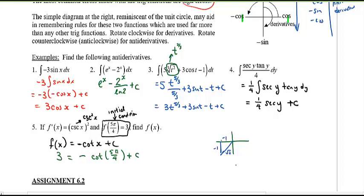Cotangent is the same thing as adjacent over opposite, it just happens to be positive one. So three equals to negative one plus C, C equals to four, and there we go. f(x) must be the negative cotangent of x plus four.